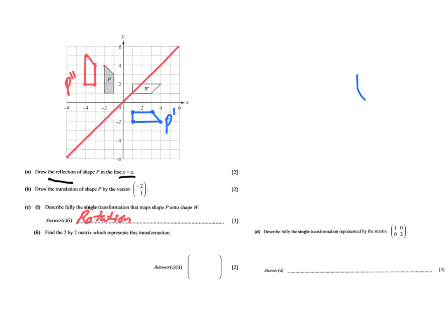Get a piece of tracing paper, put it on top, quickly trace shape P, stick your pen in what you think the centre is, and move the tracing paper — you'll notice that P exactly maps onto W. That confirms the centre is the origin, (0, 0). It is a 90-degree rotation in the clockwise direction. Don't forget to give all three pieces of information: the type, the centre, the degrees, and the direction.